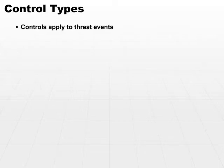When discussing different techniques for access control, remember that controls apply to specific threat events. That's the whole idea of a control — you're trying to stop, intercept, or sometimes detect that a particular threat event has occurred. So let's take a look at some of the different control types.